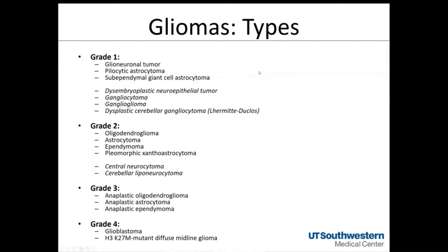The most common grade one glioma subtypes are pilocytic astrocytoma, subependymal giant cell astrocytomas, and glial-neuronal tumors. If you have a pediatric practice, you'll see many more pilocytic astrocytomas. In an adult practice, you'll see a similar but rare number of mixed glial-neuronal and pilocytic astrocytomas. If you have a large epilepsy practice or concentration of tuberous sclerosis patients, you may see more SEGAs — subependymal giant cell astrocytomas.